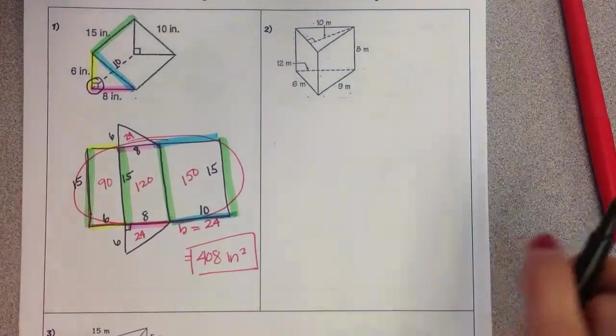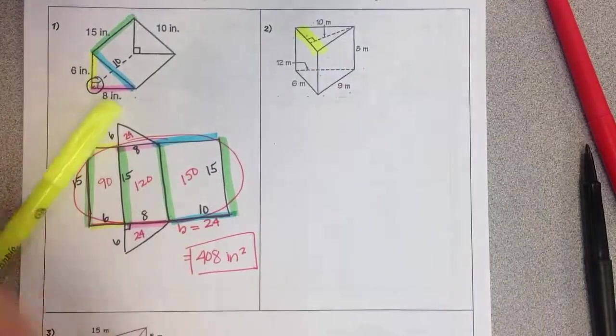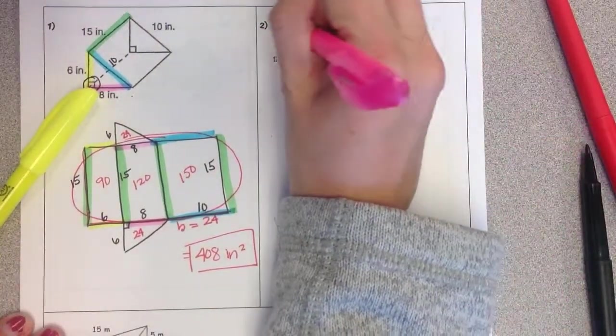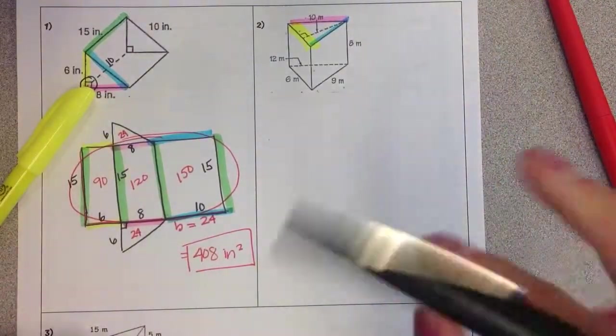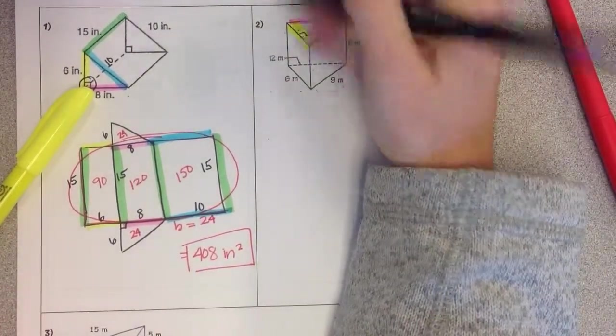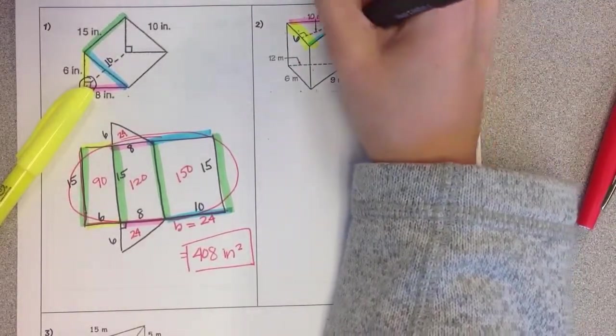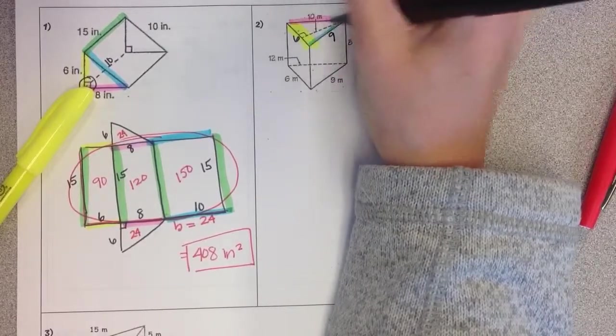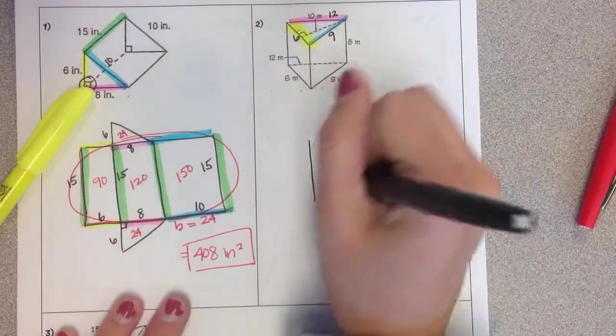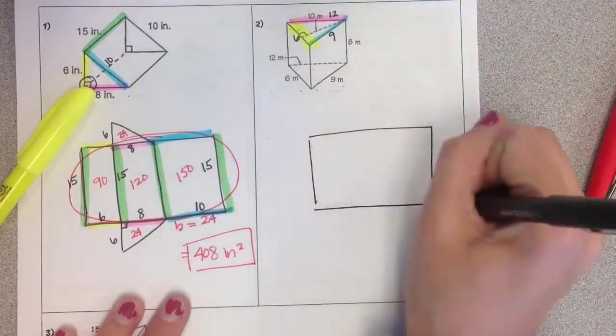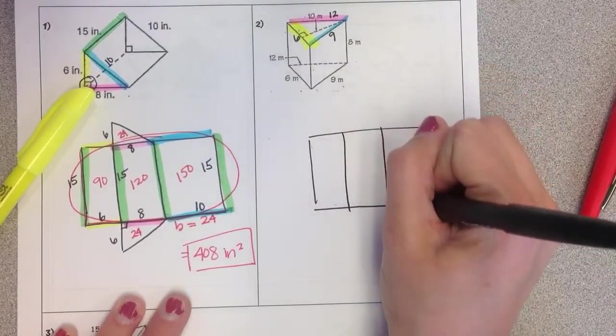Number 2. First thing I'm going to do is I'm going to identify my 3 side lengths. So this length right here should be the same as that. So it's 6. This length right here should be the same as that, which is 9. And this length right here should be the same as down here, which is 12. So if I'm drawing out my net, it should be 6 by 9 by 12.